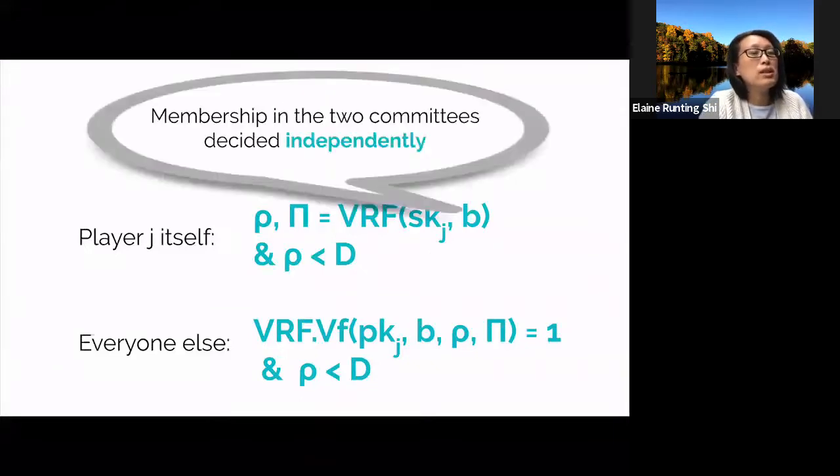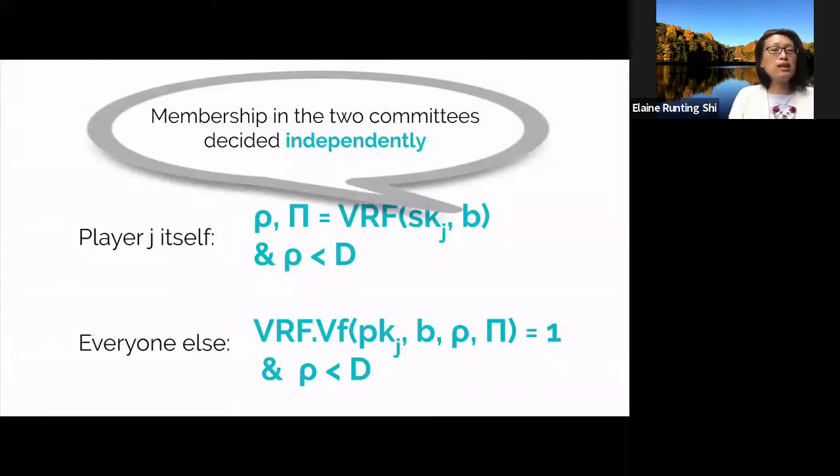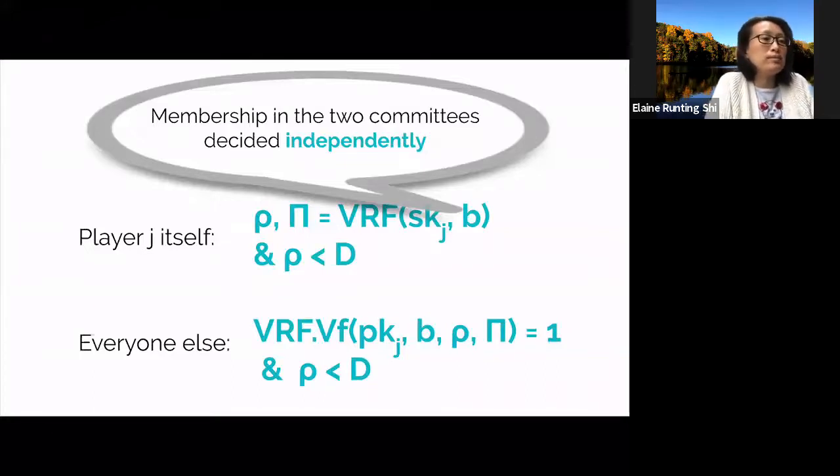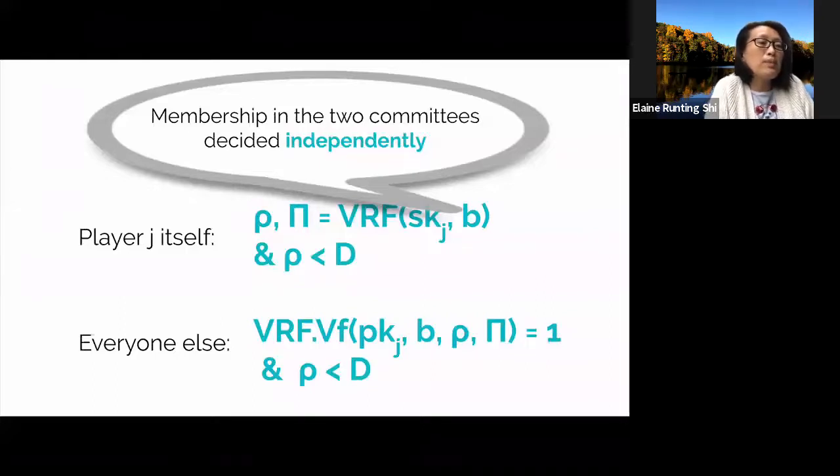What's important here is that the two committees, the committee that vote on 0 and the committee that vote on 1, are decided independently by invoking the VRF twice. Therefore, whether a player is in the 0 committee is independent of whether she is in the 1 committee. Had it not been the case, say the committee that vote on 0 is the same as the committee that vote on 1, this is problematic because the adversary can simply make the committee vote on 0 first. At this point, the committee members will disclose their identities, and then the adversary can adaptively corrupt all of them. And once corrupt, the adversary can perform an attack on the other bit one. Essentially, it can make some honest players include one in their extracted sets and others not.